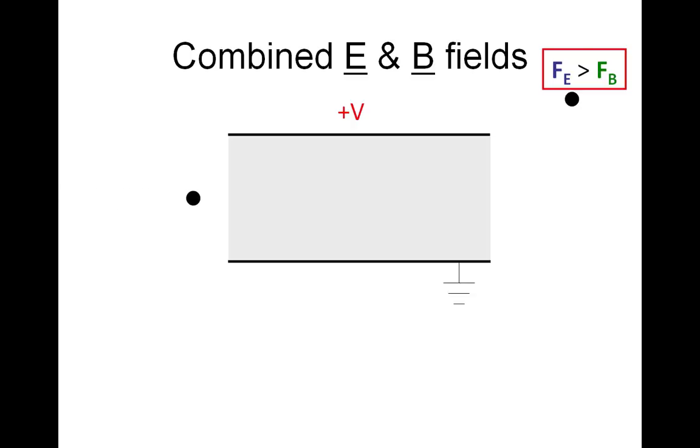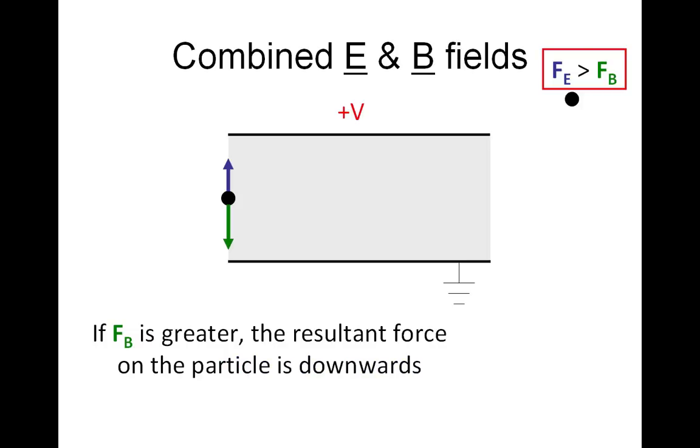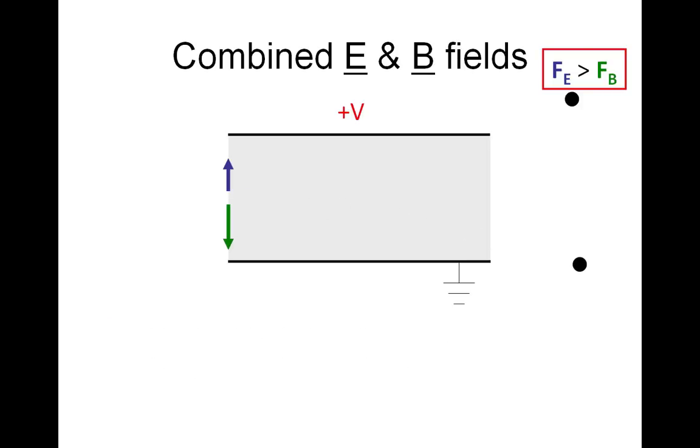If we look at a different scenario, same negatively charged particle, but this time the magnetic force is greater. The resultant force on the particle is downwards, so our particle follows a downward path.